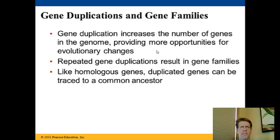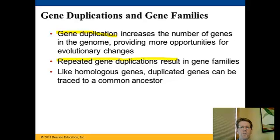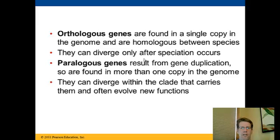When we start examining DNA, there are distinct things to keep in mind. Over time, there's been a lot of gene duplication — genes in a genome have been copied and mutated, and these repeated gene duplications result in gene families. Homologous or duplicated genes give us an indication of how we can link organisms to a common ancestor. This brings us to two key terms in Chapter 26: orthologous genes and paralogous genes.